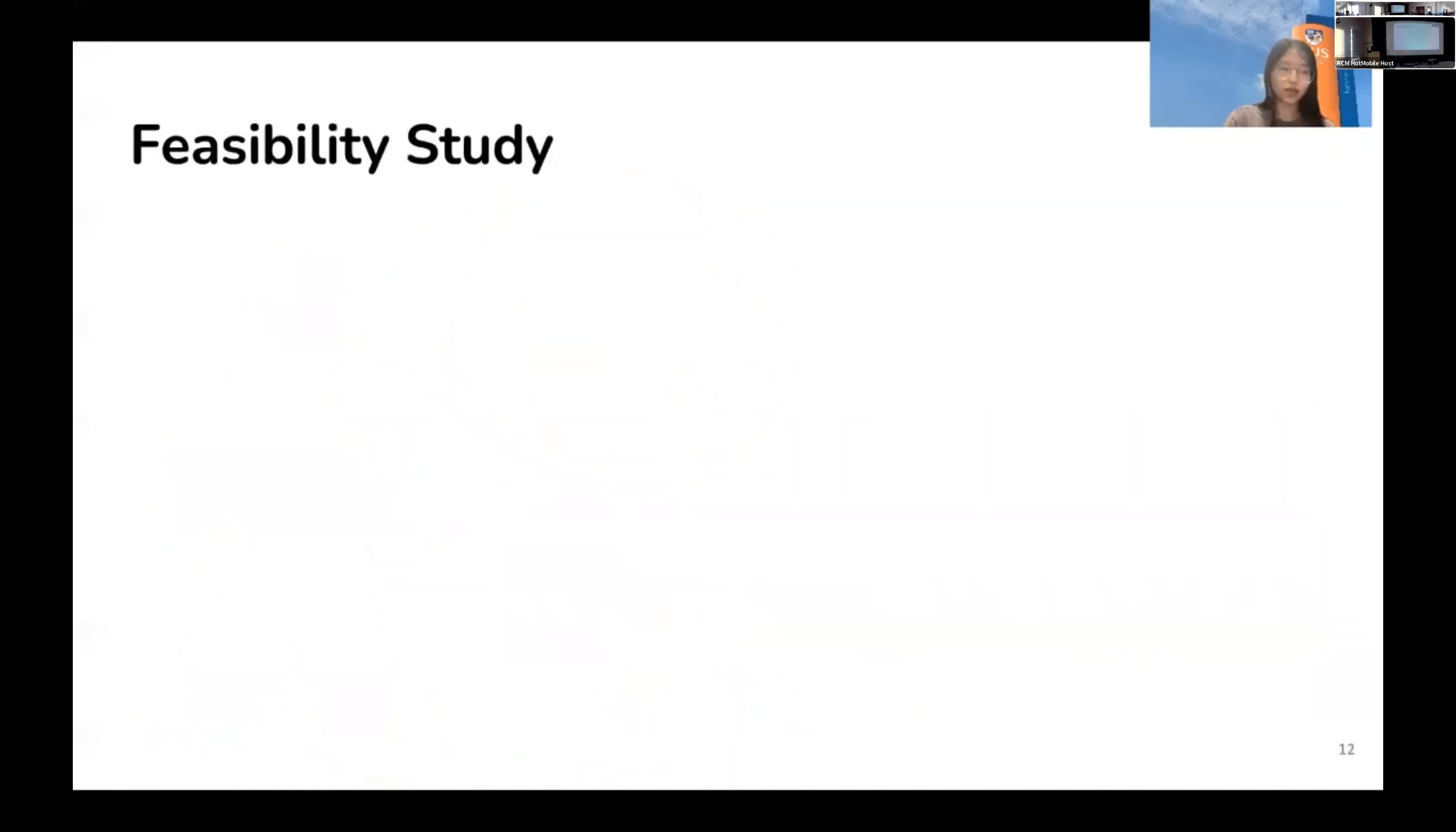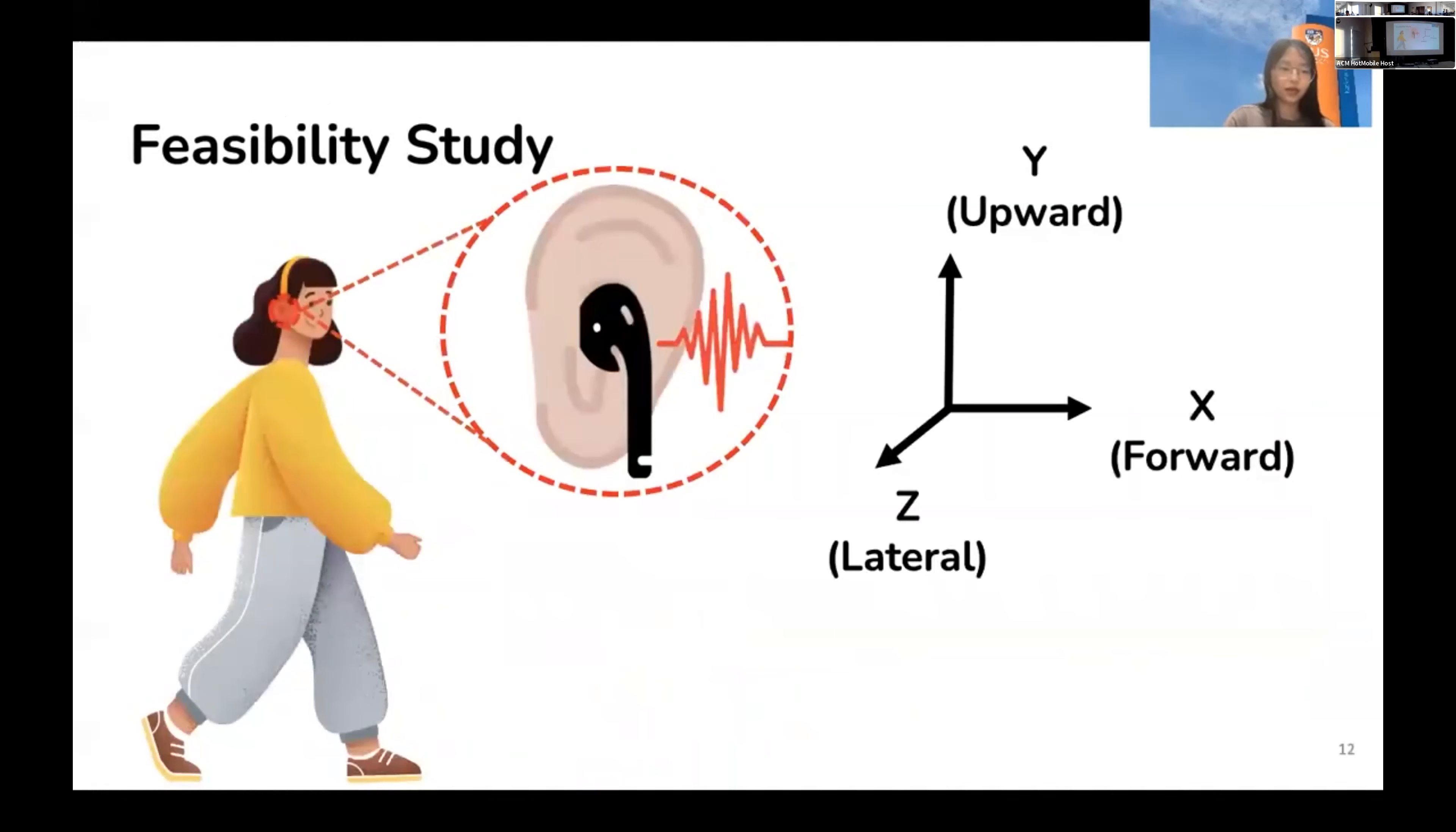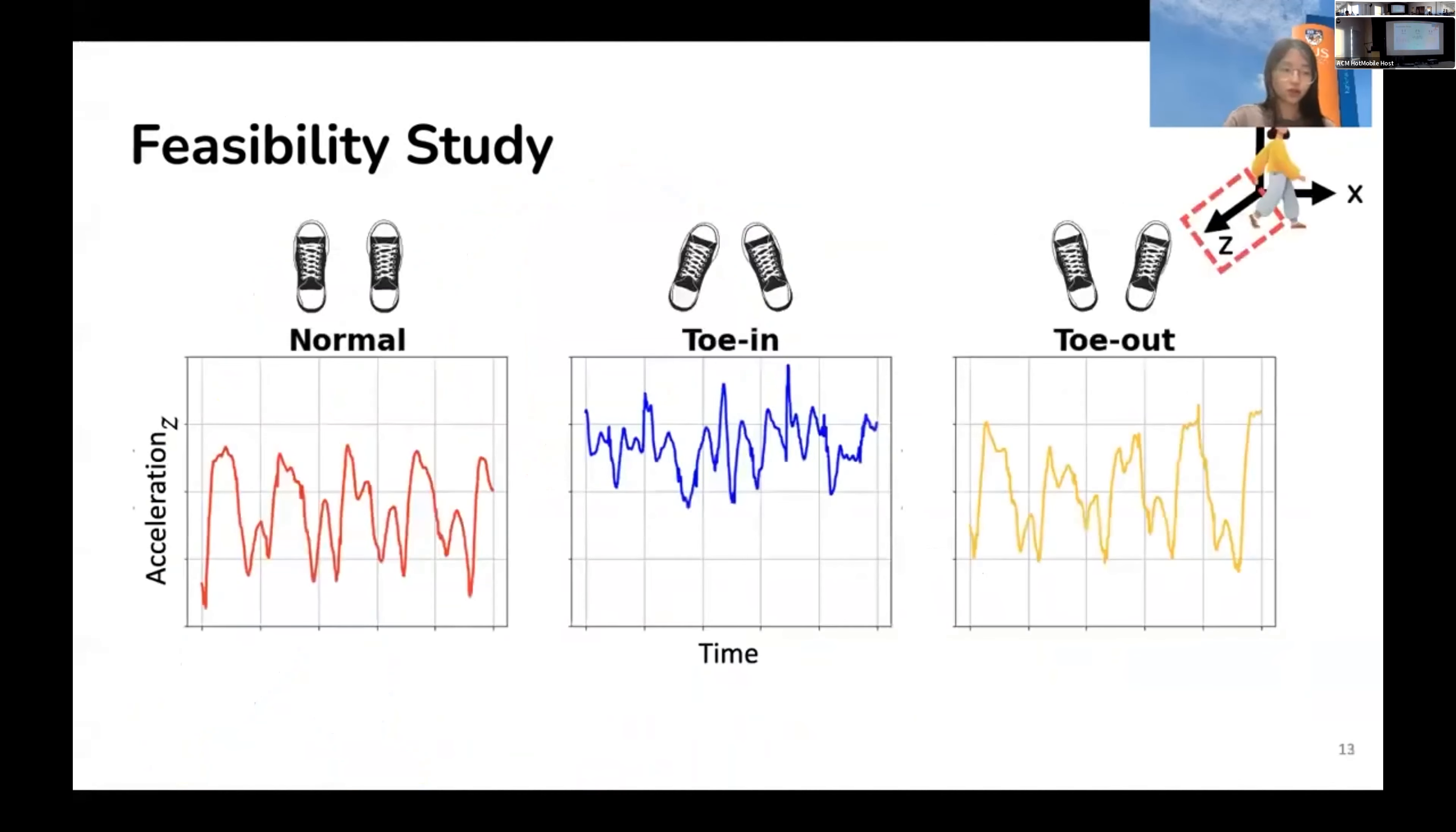To answer this question, we first conduct a feasibility study. We collect accelerations along three directions: x pointing forward, y pointing upward, and z pointing to the lateral side. These figures show the raw accelerations along z direction for normal, toe-in, and toe-out postures respectively. As you can see, there are clear differences in the signal shape and value, which can actually justify the feasibility of our work.